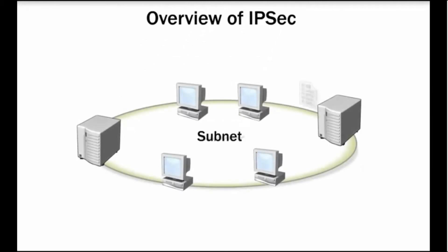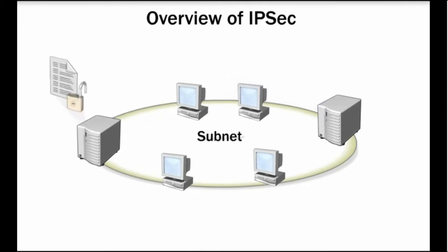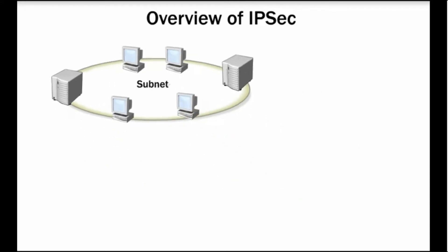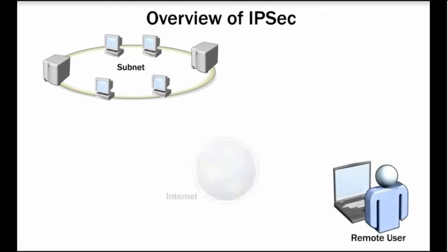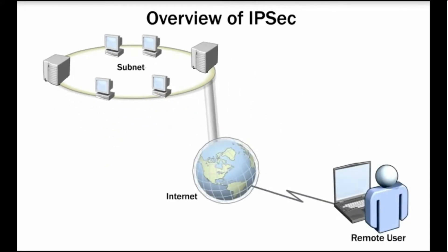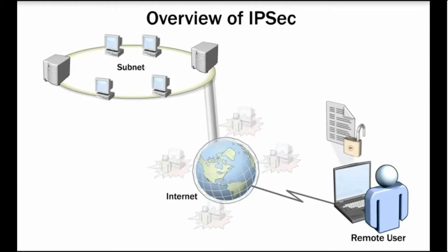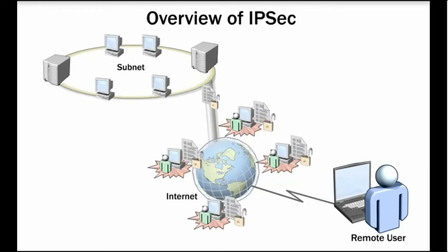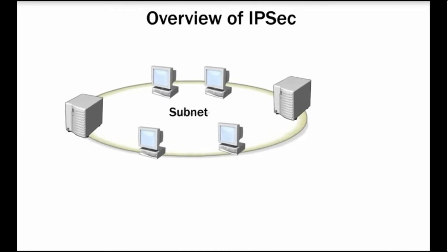When computers on the network communicate using IP, they send data to each other across the network. If the data being sent is unsecured, then unauthorized users or applications can access or intercept the data that is transmitted. Also, if users connect to a corporate network using the internet, the network traffic is accessible to a large number of unauthorized users, making the data more vulnerable to attacks and theft.